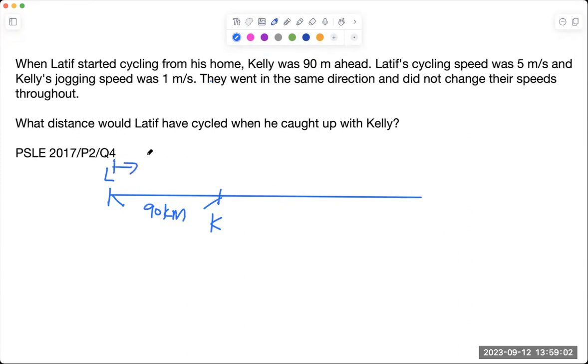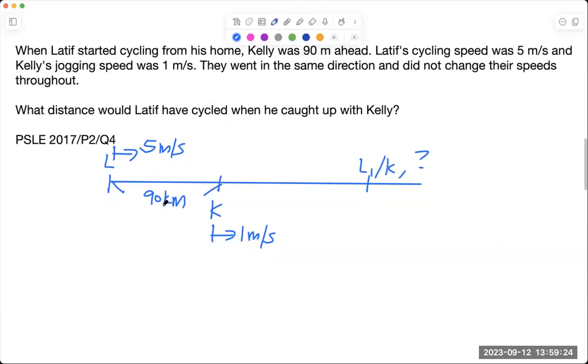So for L, his speed is 5 meters per second. For K, her speed is 1 meter per second. And what distance would Latif have cycled when he caught up with Kelly? Caught up means you have L1, K1. And this is the point where they caught up with each other, where they meet each other.